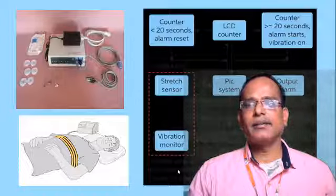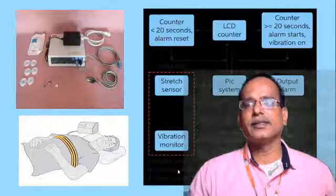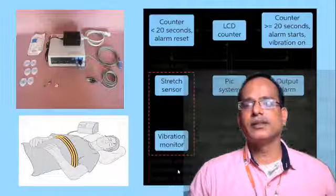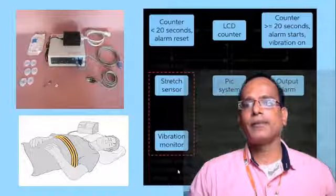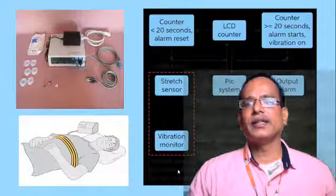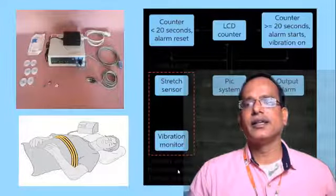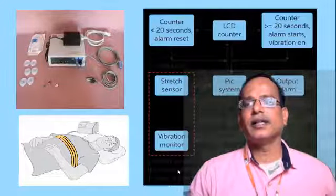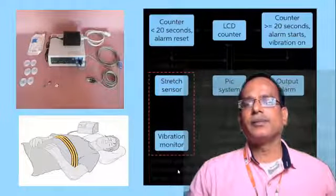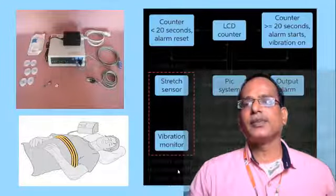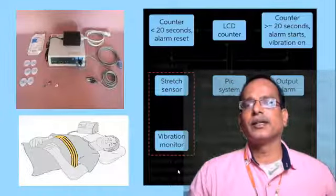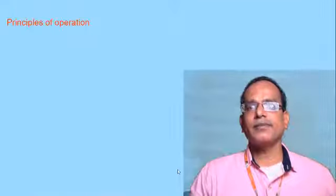A band connected to the patient's chest acts as a stretch sensor. This stretch sensor is connected to a vibrator monitor and also to the PIC system — the Programmable Interrupt Controller system — which has been programmed so that if breathing is stopped equal to or greater than 20 seconds, it provides an output alarm indicating to the hospital that the patient is in a dangerous condition.